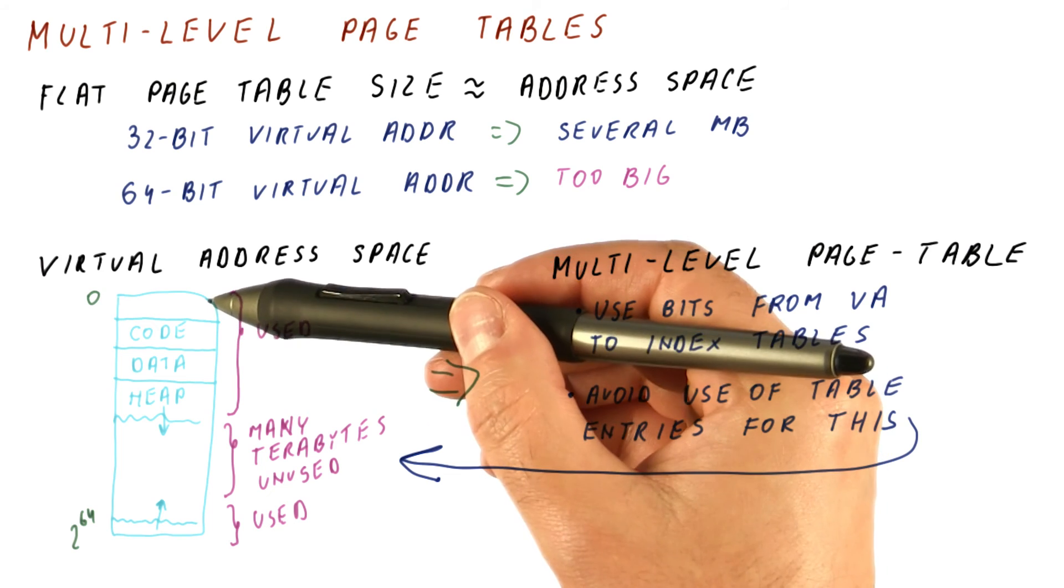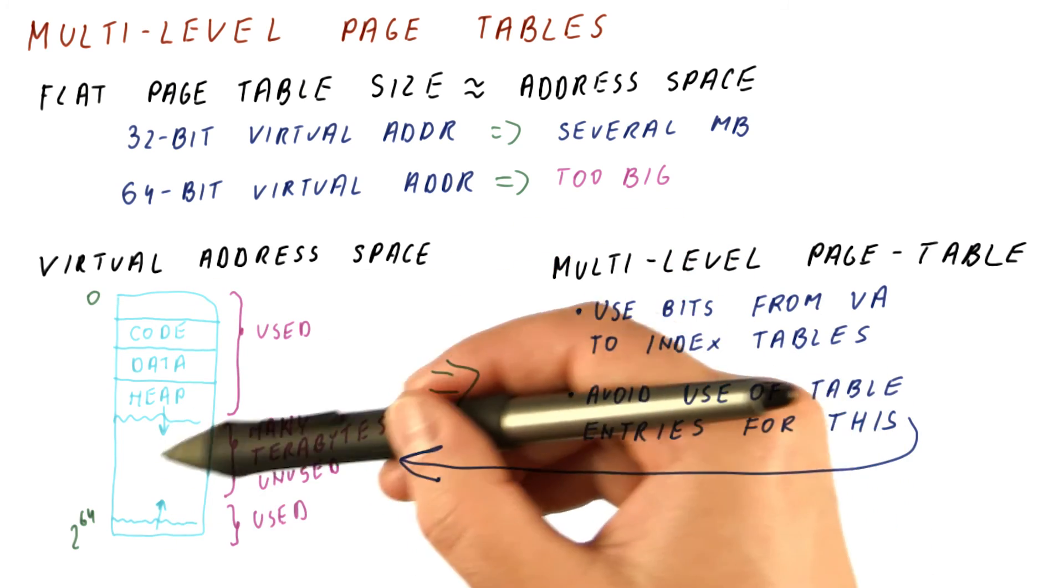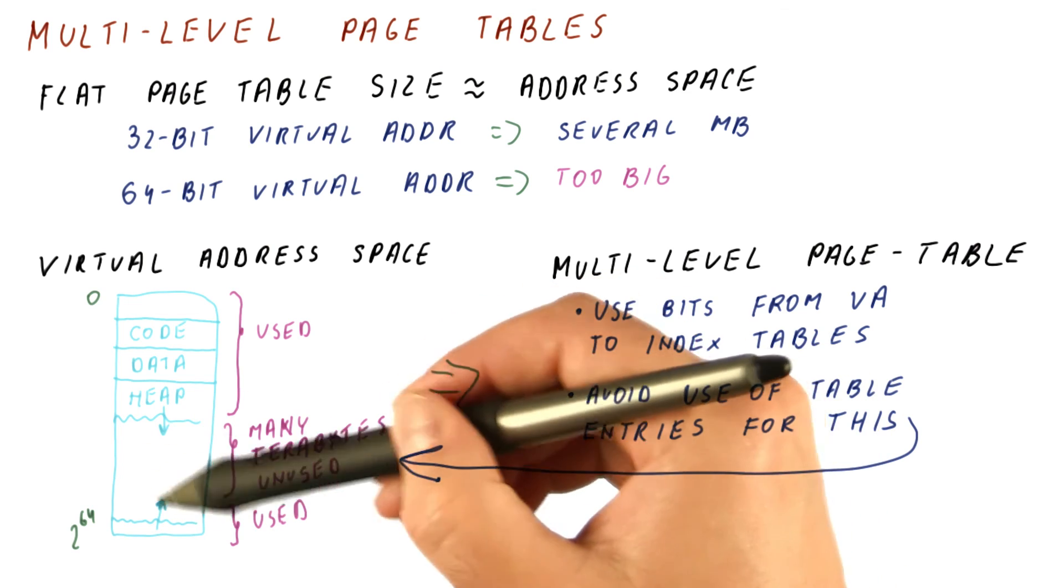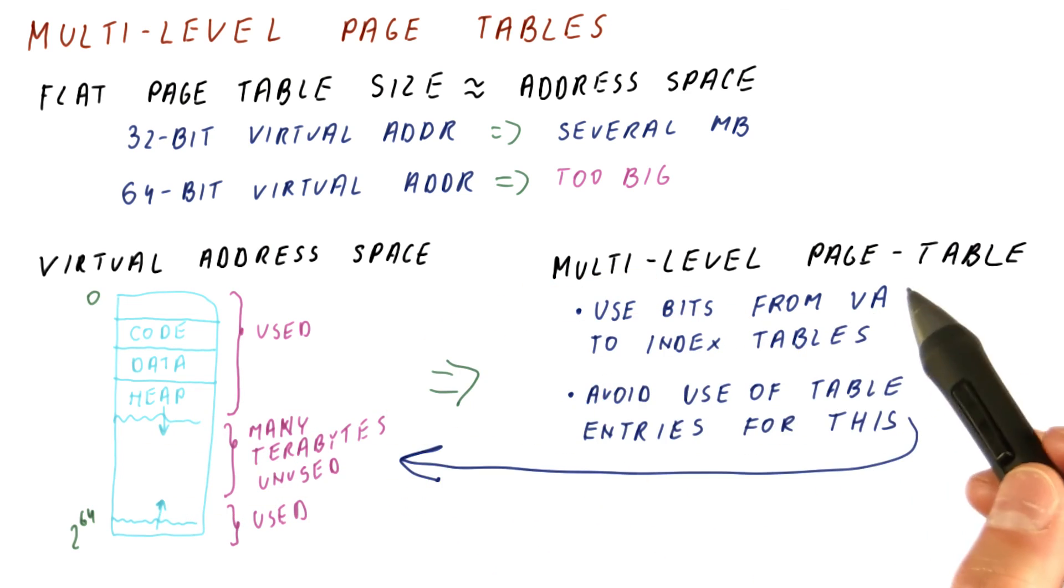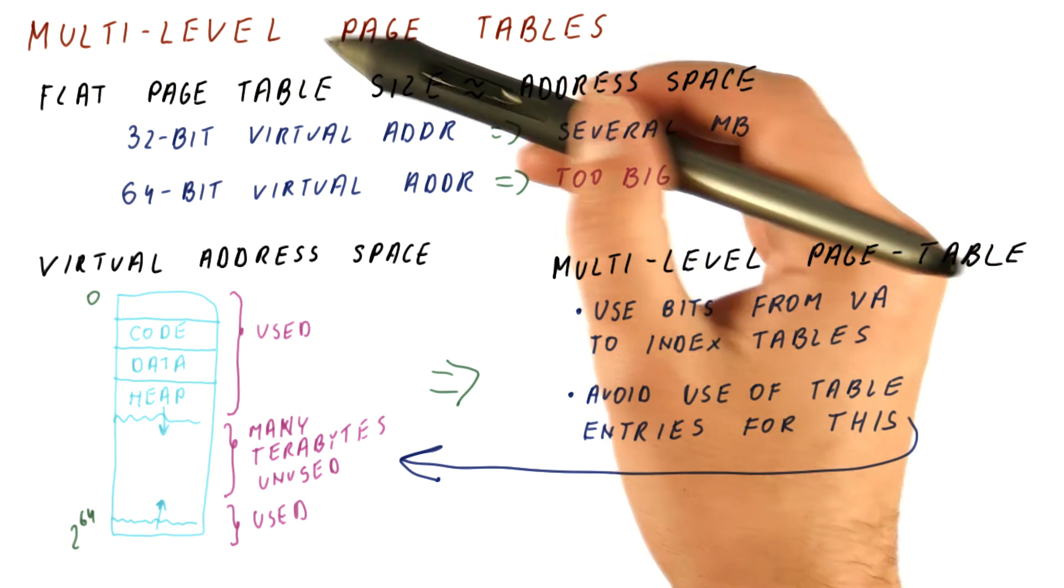But we want to avoid the use of table entries that correspond to this. Meaning, we want to have a pretty normal page table like thing here and here, but somehow not have anything for this so that we can simply omit those page table entries. Now that we have the idea for what we want, let's see how the multi-level page table is actually organized.